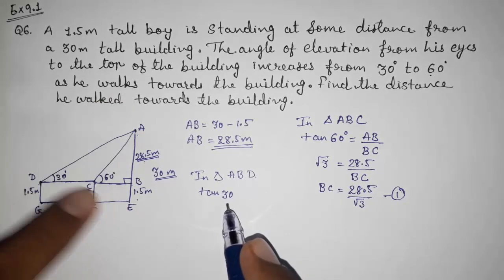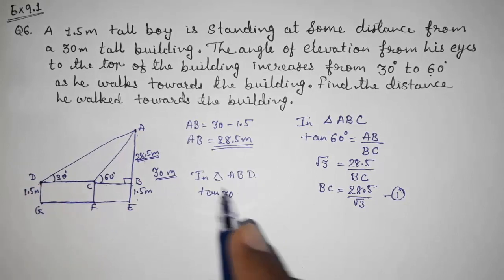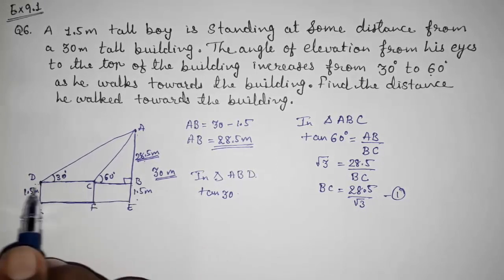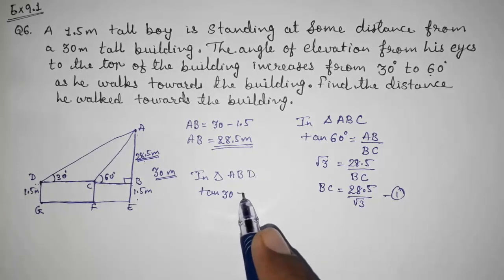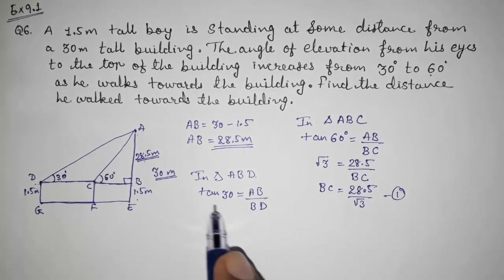Now in this ABD you can see this is 30, tan 30 degrees. They had given opposite and we have to find out this whole BD. So tan 30, that is equals to AB upon BD.